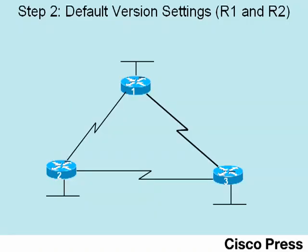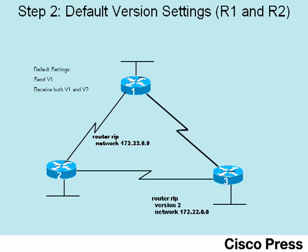Both R1 and R2 have identical RIP configuration with the router RIP command followed by network 172.22.0.0. By default, both routers send version 1 updates only but are willing to receive both version 1 and version 2. Router 3, however, was pre-configured with the version 2 command, so it only sends version 2 updates and will only process received version 2 updates, ignoring any received version 1 updates.